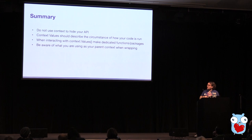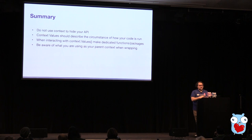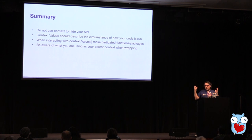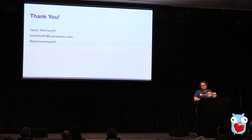In summary: don't use context values to hide your API — it makes it harder to understand what's going on, harder to debug. When you are interacting with context values, put them inside a function or a package to isolate and control where they're being used so you can monitor and understand what's actually happening. Context values should really describe the overall circumstances of your application — the REST request it's coming in on or the backend process it's running — they shouldn't define core functionality or alter major portions of your functionality. We mostly use it for tracing, observability, and logging. And just be aware of your parent context when you're wrapping. That's it — thank you. If you have any questions, I'll be hanging out by the Course Hero booth. I'm happy to talk about context or how we use Go at Course Hero or anything else. Thank you.